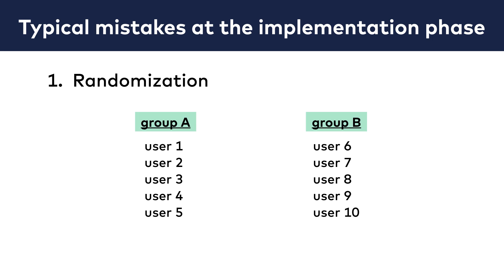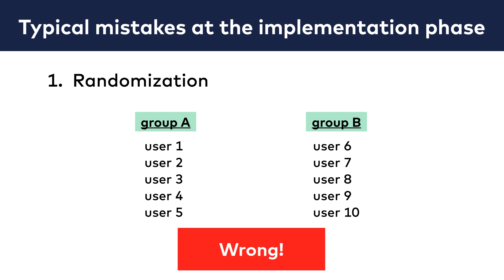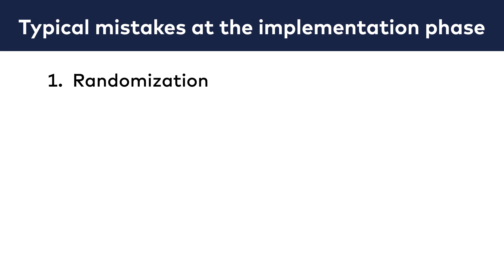The second half sees version B. That's a problem, because those users who registered earlier might act very differently than those users who registered later. So you should assign your A and B versions randomly.